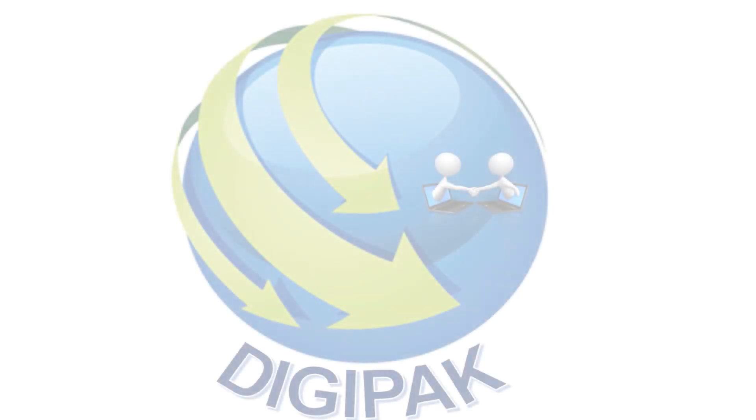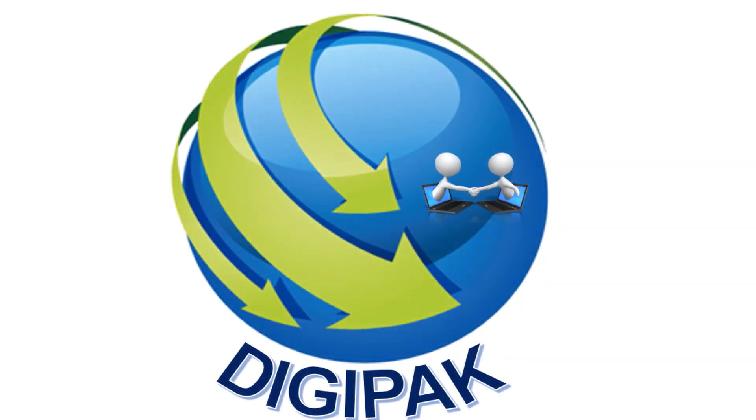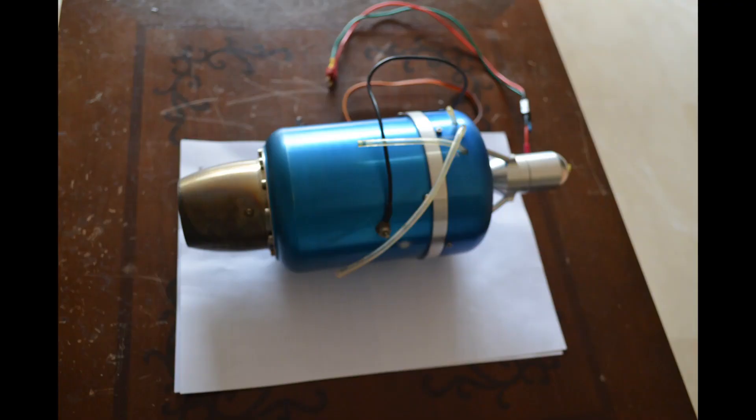Welcome viewers, in this series of videos we are going to build an Arduino based ECU for model jet engines. The engine that we are going to use is J66 model jet engine from China. This engine is based on 66 millimeter compressor configuration which is very popular with the model jet engine builders.